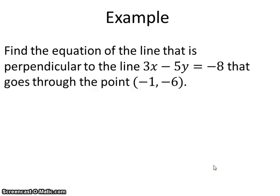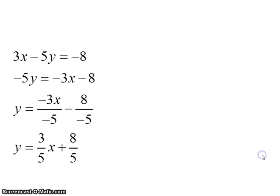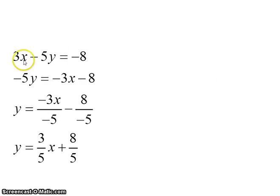To find the equation of our line, we need the slope and the y-intercept. Our first step is to find the slope. We know that the slope of a perpendicular line is opposite and reciprocal from the slope of the given line. Our given line is in the form 3x minus 5y equals negative 8, so we need to find its slope by putting the equation into y = mx + b form.